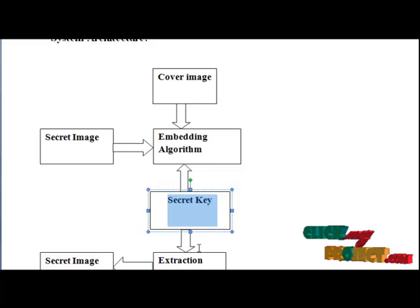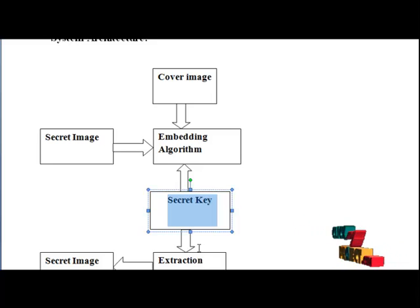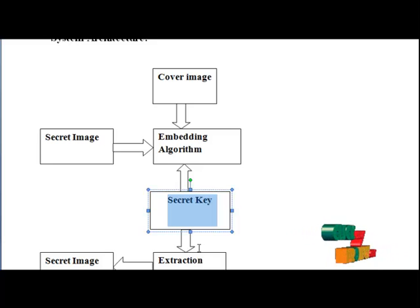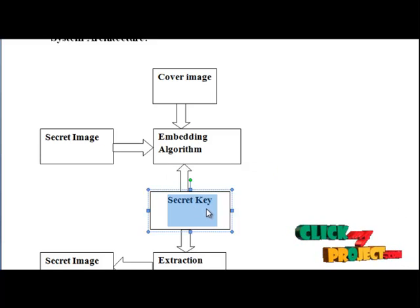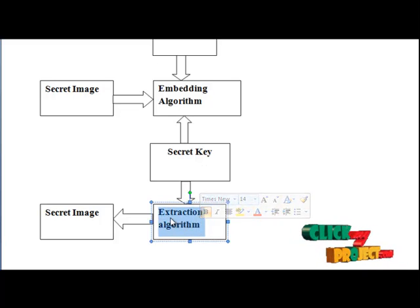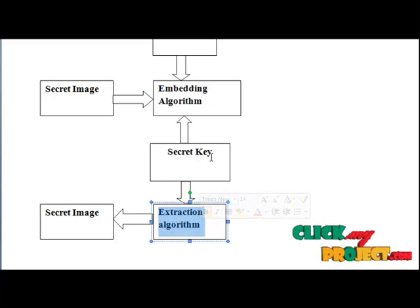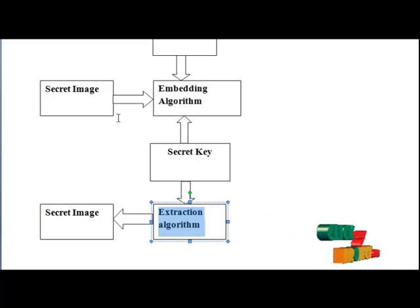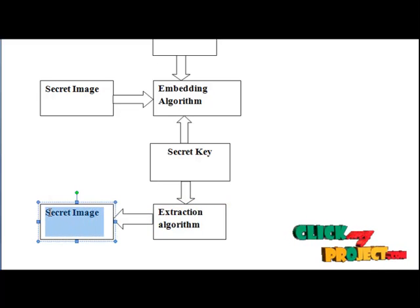In LSB Embedding, the data is hidden in the least significant bit of each byte in the image. The size of each pixel depends on the format of the image and normally ranges from 1 byte to 3 bytes. Our RSI algorithm provides a secret key, and for extraction purposes, we first install the key value already generated by our RSI algorithm. Only when the correct key value is entered can the secret image be extracted.